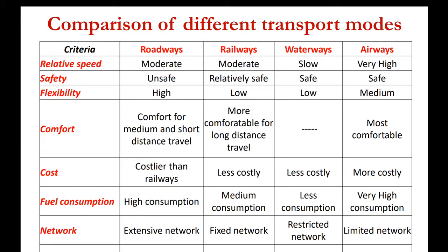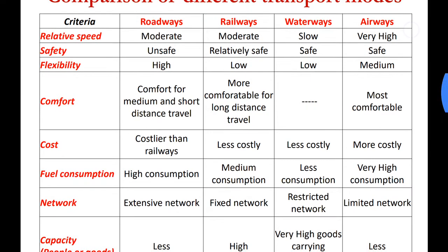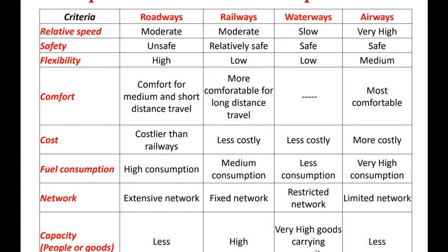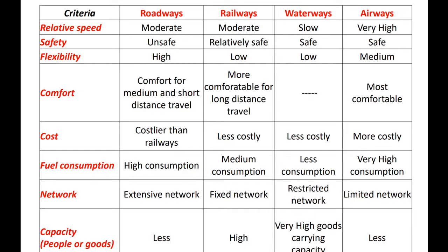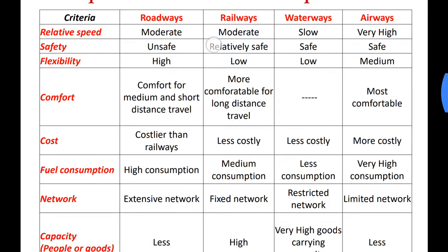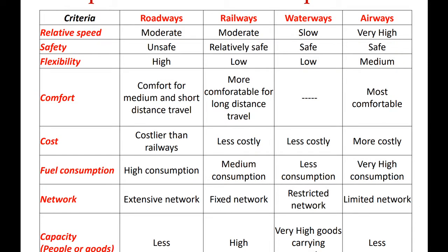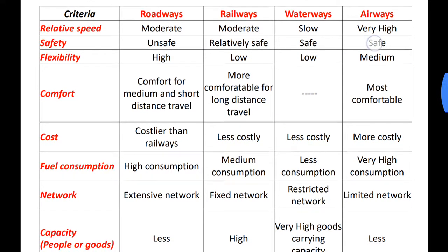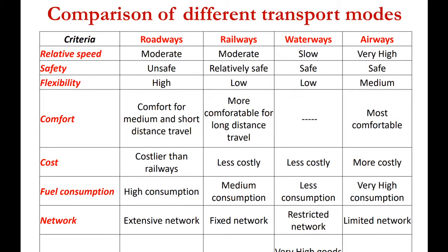Let us now compare all four modes based on different criteria. First: relative speed — highest for airways and slowest for waterways, with roadways and railways being moderate. Second: safety — the most unsafe mode of transport is roadways. Railways is comparatively safer, and waterways and airways are safer than both roadways and railways. Although if there is an air crash or a ship accident, many lives may be lost — about 100 passengers might face fatal accidents in an air crash.